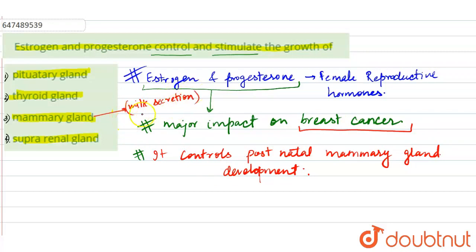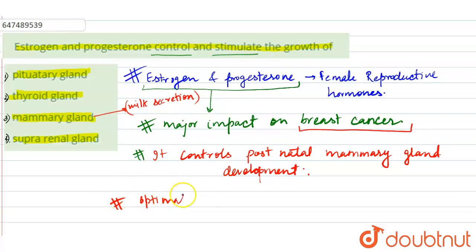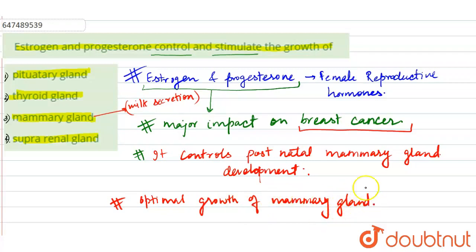Body में female की, तो यह estrogen और progesterone जो होती है, यह control करते हैं, इसकी optimal growth करके. They help in optimal growth of mammary gland — mammary gland की जो growth हो, वो बिलकुल correct हो, so that cancer can't be developed.